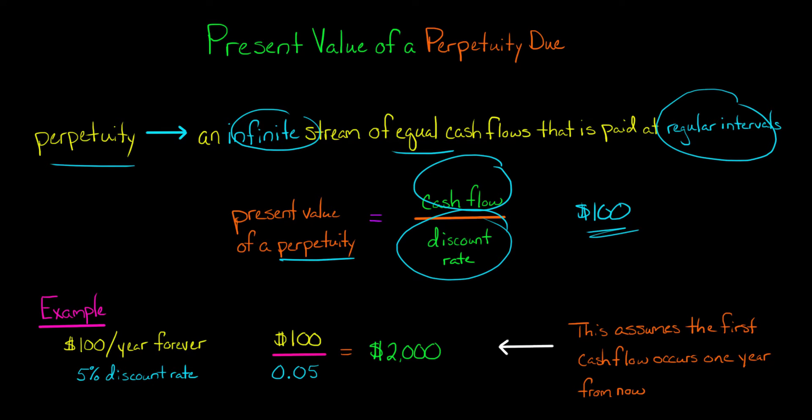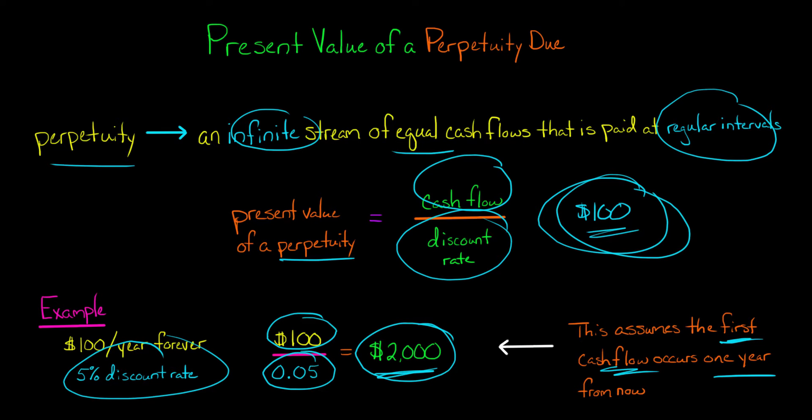So let's say your discount rate was 5%. You take $100, you divide it by 0.05, and it gives you $2,000. $2,000 is the present value of that infinite stream of $100 cash payments. But that's assuming that the very first cash flow is occurring one year from now.